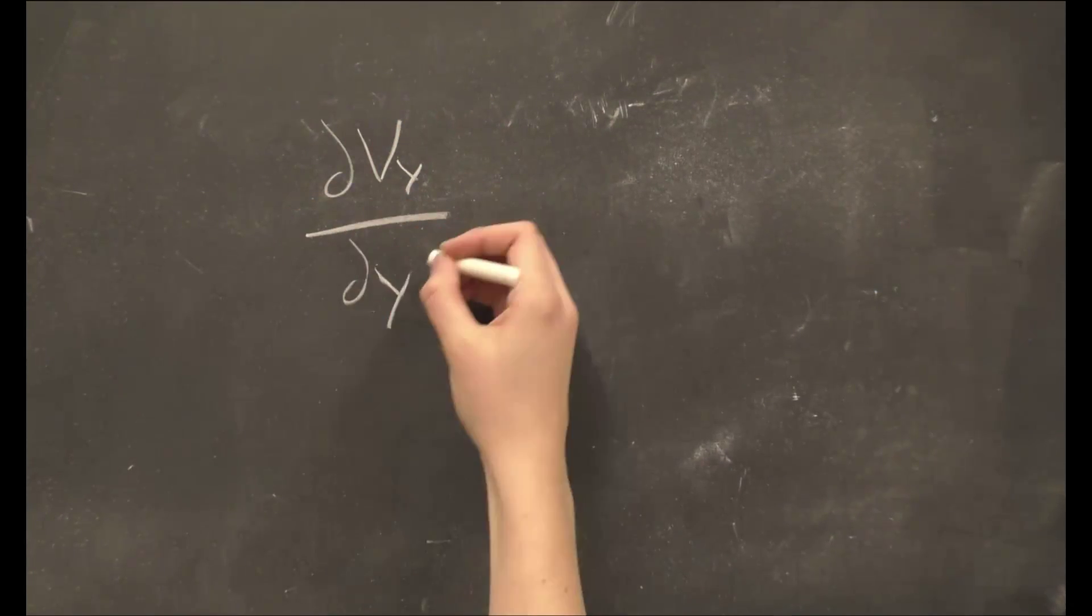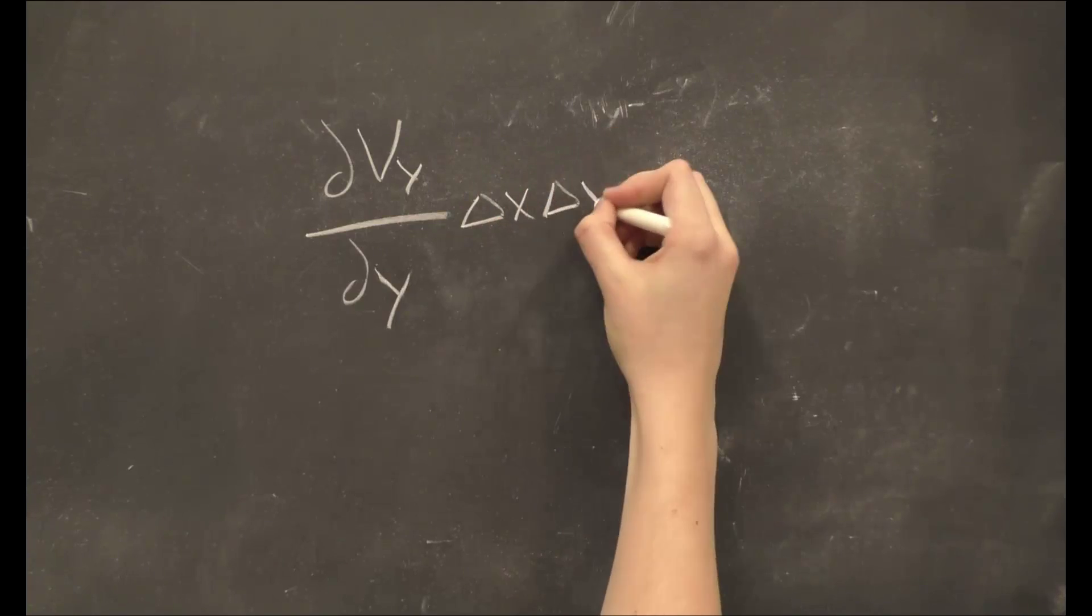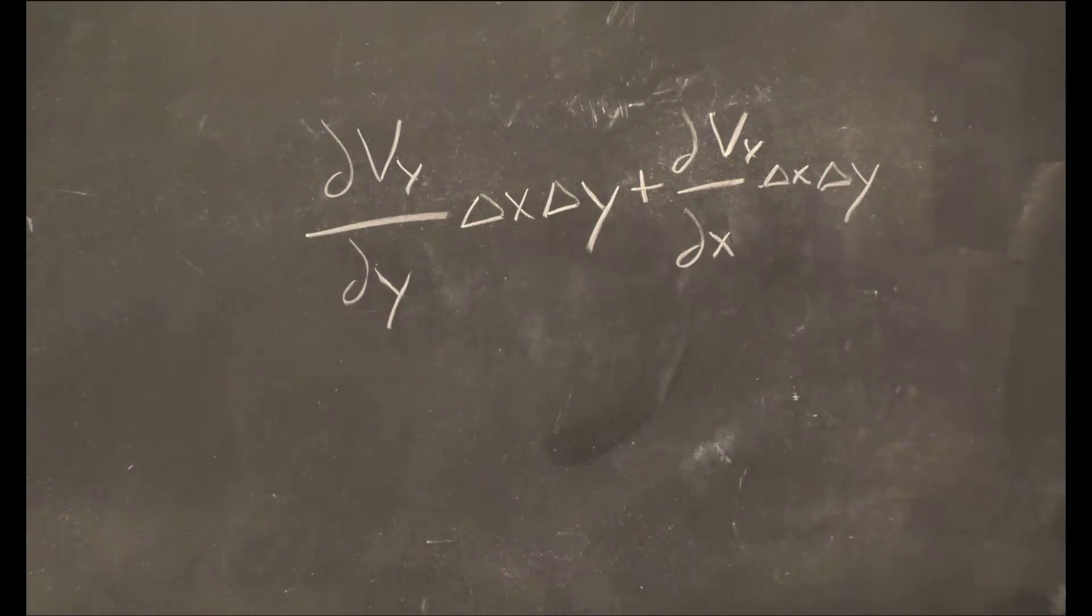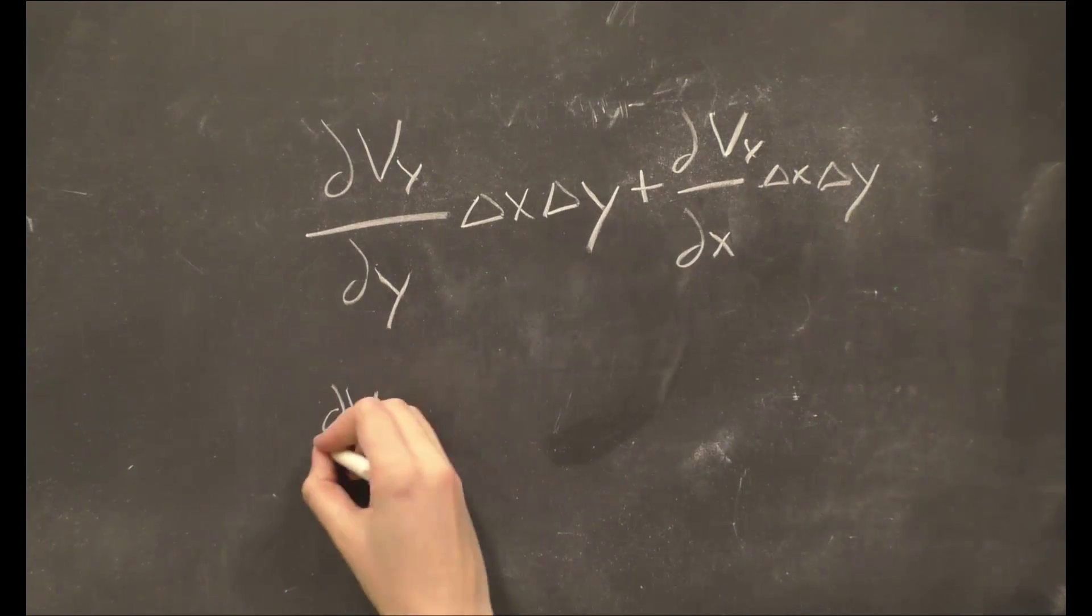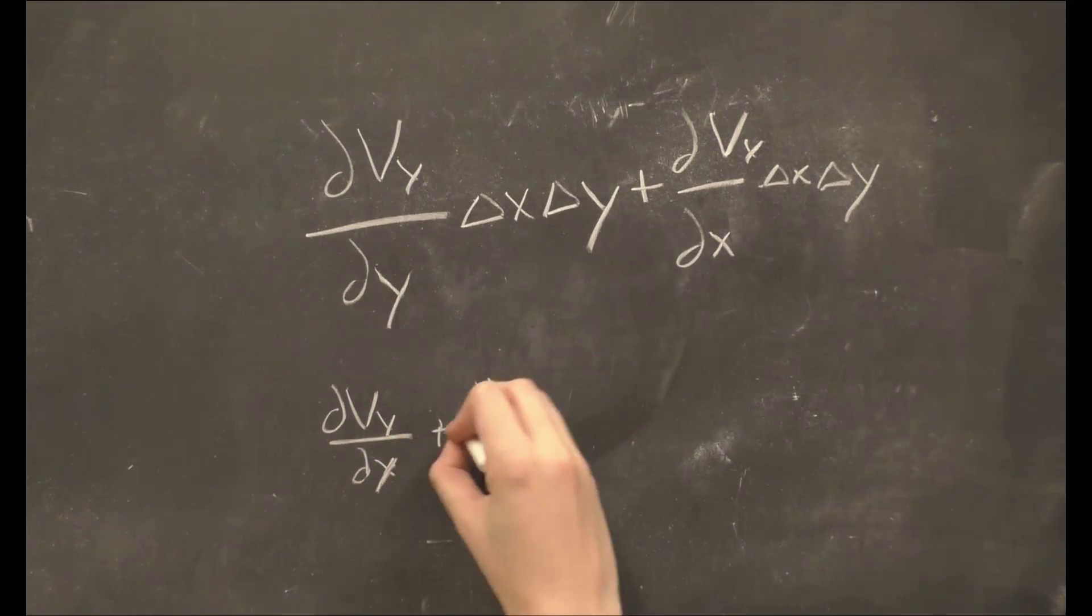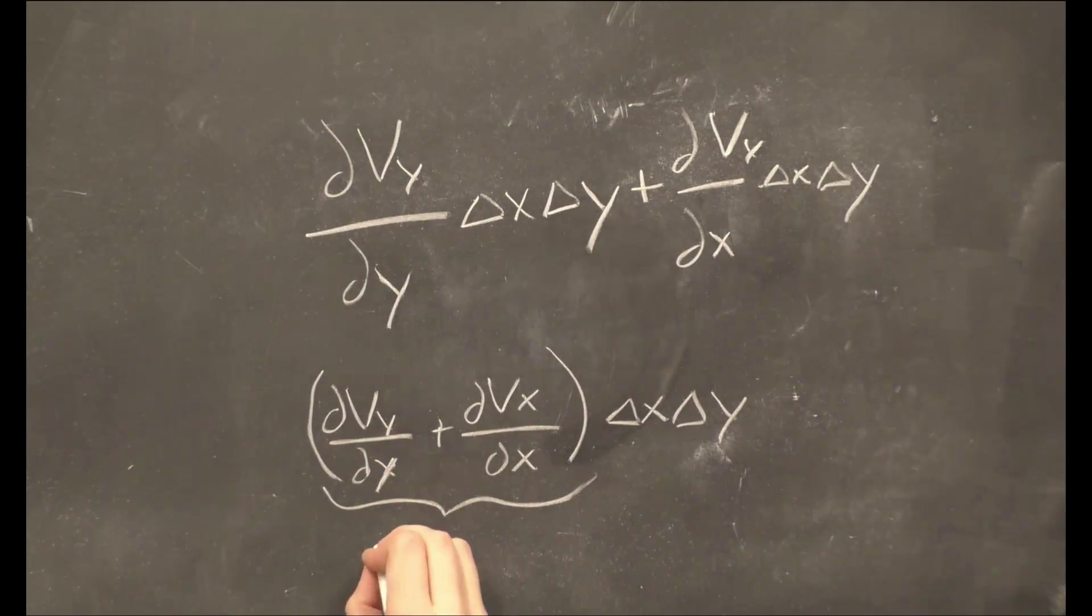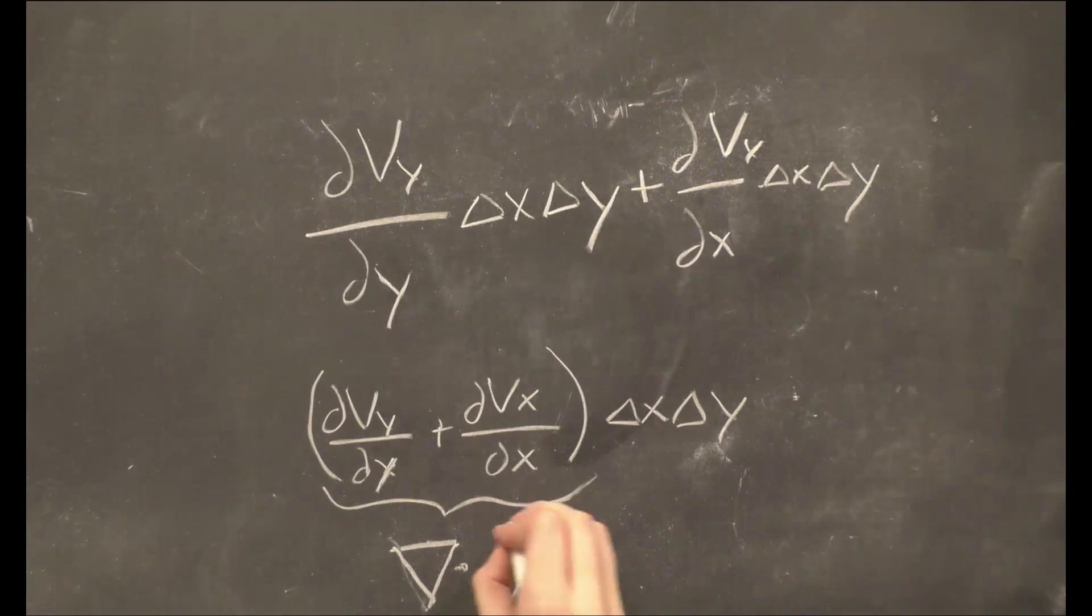Thus, we can rewrite our expression as dVy dy delta x delta y plus dVx dx delta x delta y. We simplify this expression. Our result is defined as the divergence of V times dV.